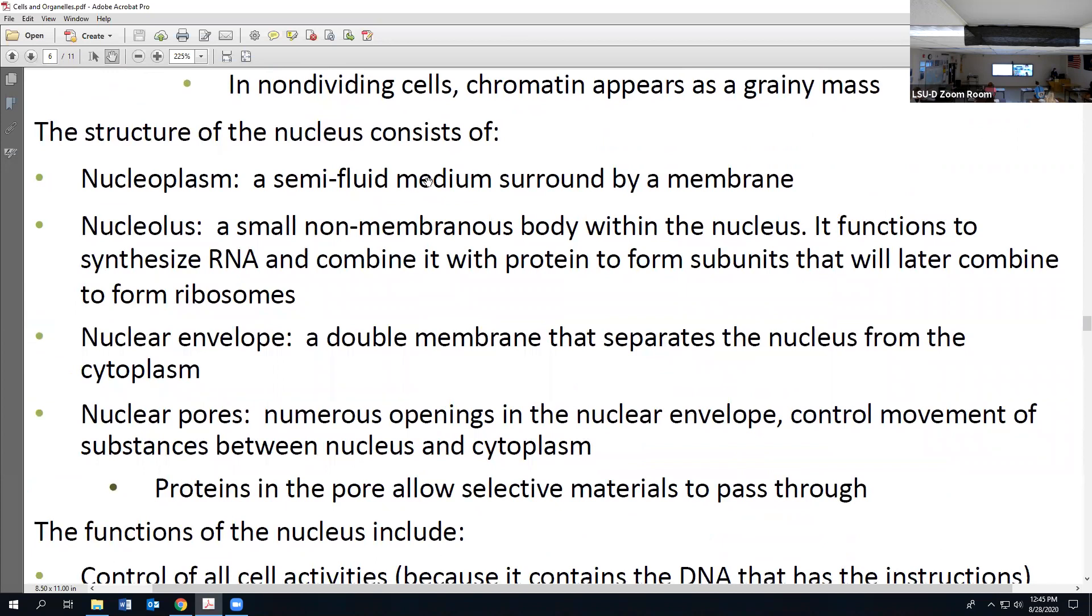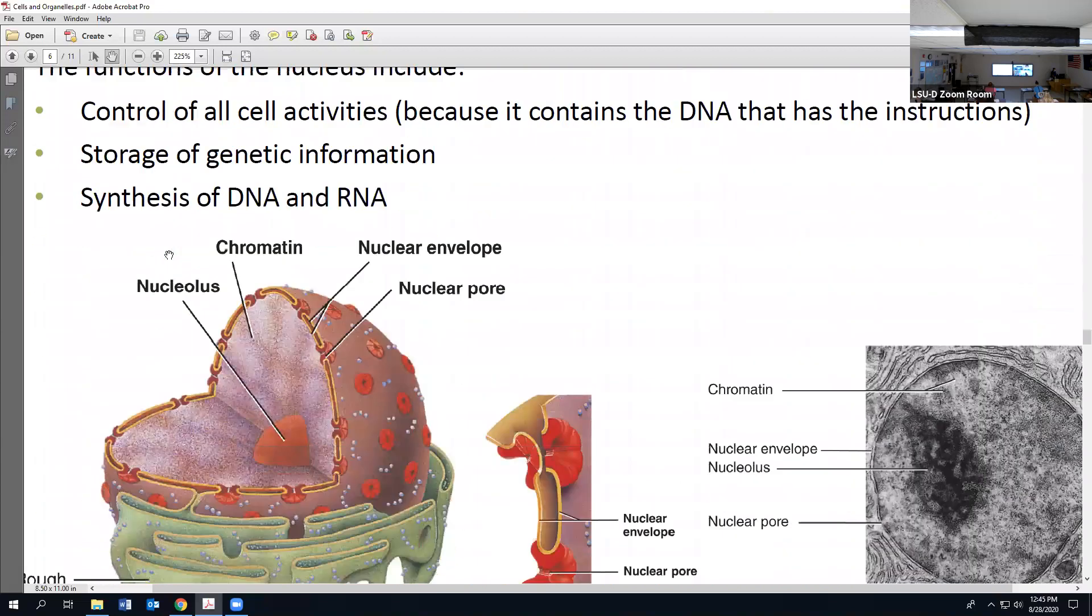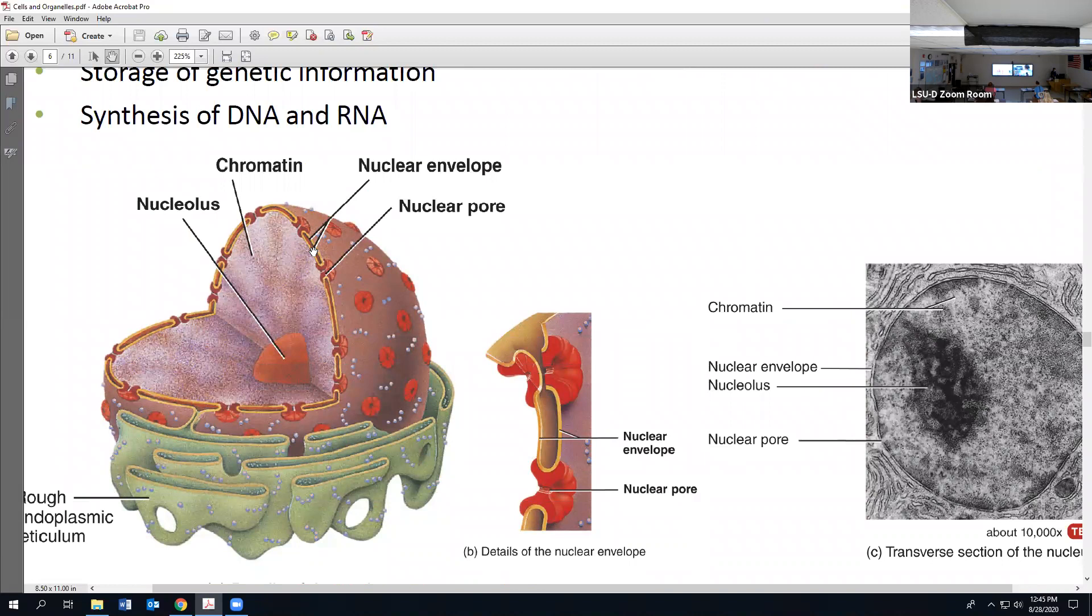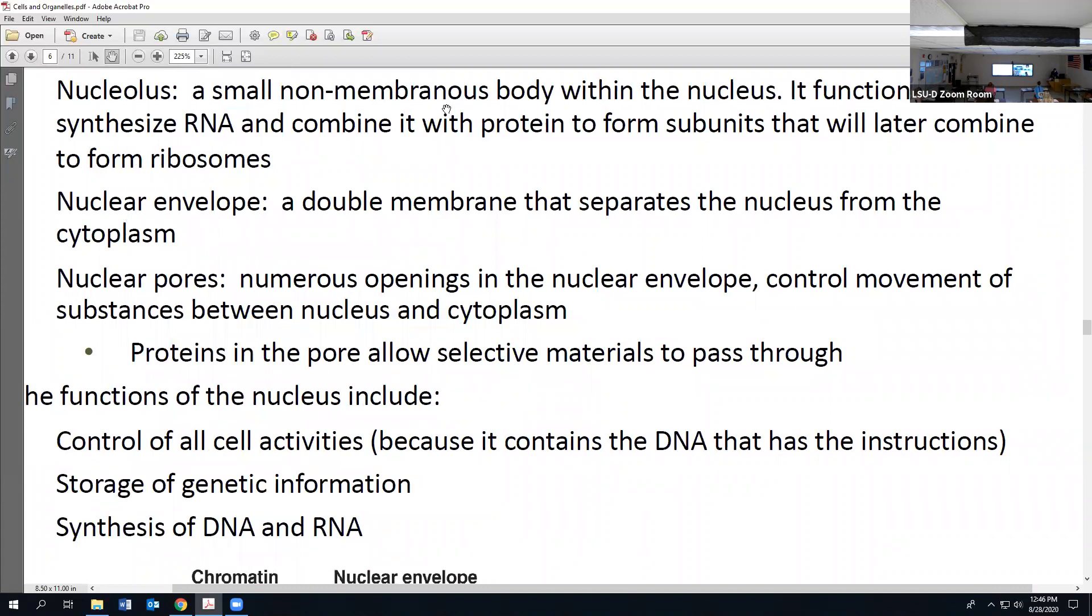Chromatin is where you find the DNA. Right before cell division is when that would disappear and we'd see those chromosomes developing. The chromatin is located within the nucleus in what's called the nucleoplasm. Like the cytoplasm inside the cell, this is specifically inside the nucleus - a semi-fluid surrounded by a membrane. That membrane surrounds the entire nucleus and we call it a nuclear envelope, sometimes listed as a nuclear membrane. Like the plasma membrane around the cell, it's a double membrane that separates what's inside from outside.